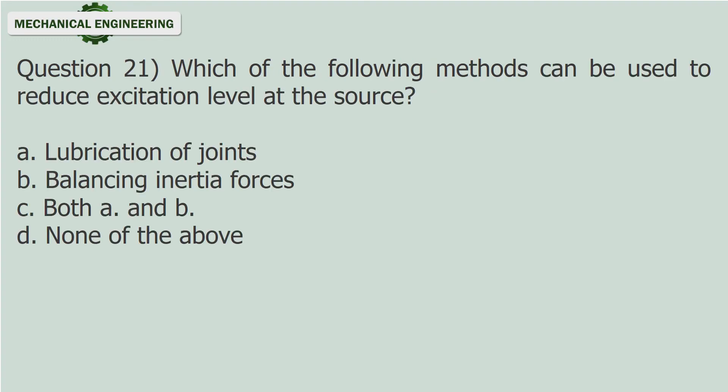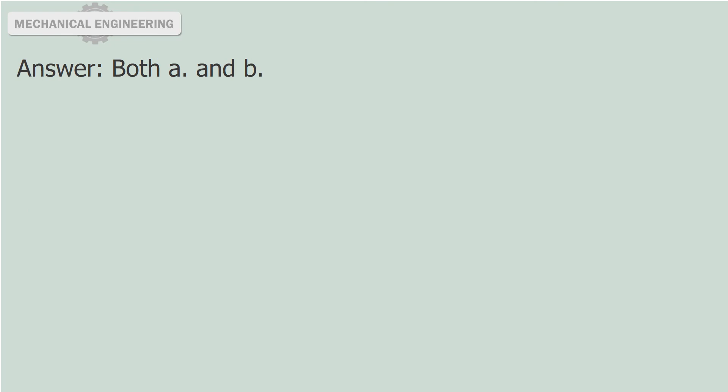Question 21: Which of the following methods can be used to reduce excitation level at the source? a. Lubrication of joints. b. Balancing inertia forces. c. Both a and b. d. None of the above. Answer: Both a and b.